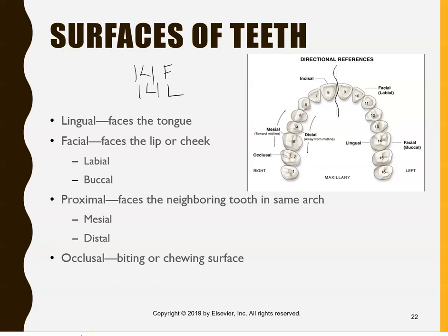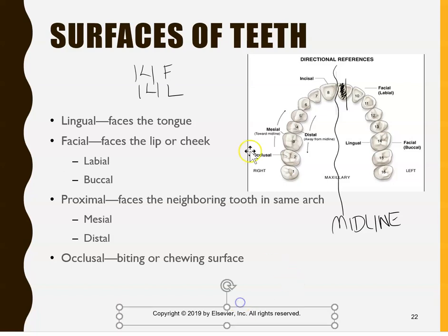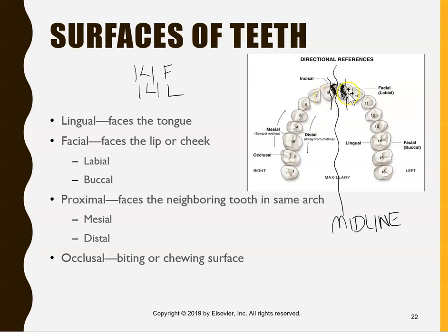Draw an imaginary line right here — this is the middle, known as the midline. When you imagine this midline, if you divide the tooth in half, the surface closest to the midline — to the middle — is known as the mesial. So here is 2-1 mesial and here is 1-1 mesial. The part that is away from the midline is your distal.